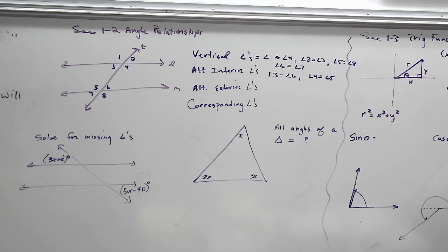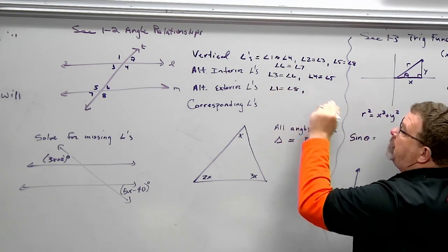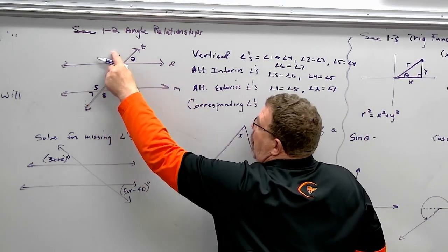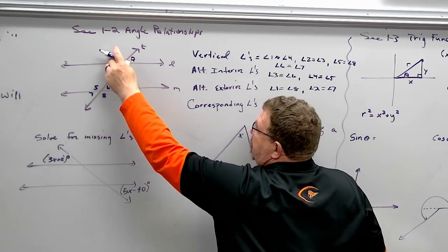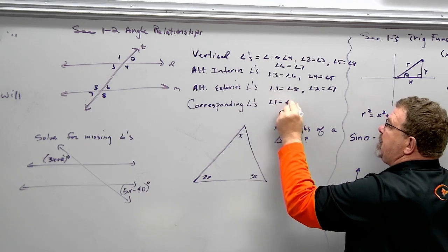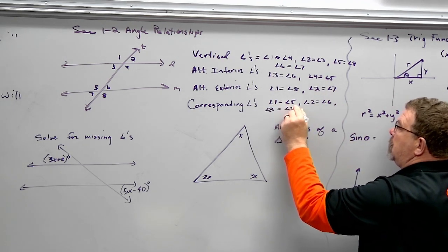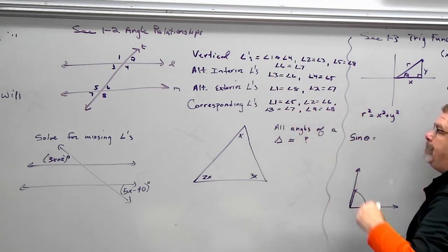For alternate exterior angles, it's exactly the same thing except they're the exterior angles. If I start at angle one, its alternate exterior angle would be eight. So angle one is to angle eight, and angle two is to angle seven. Corresponding angles are two angles formed by the transversal in the exact same position for each parallel line. Angle one and five are corresponding — both obtuse and in the same position. Corresponding pairs: one-five, two-six, three-seven, four-eight.